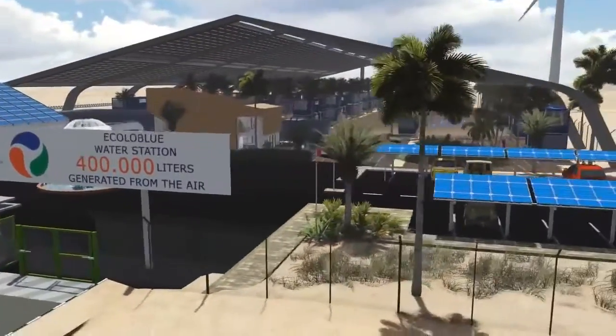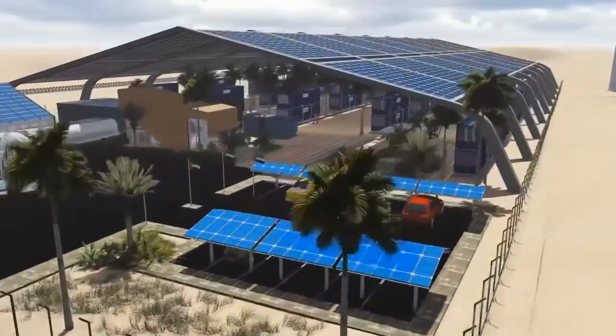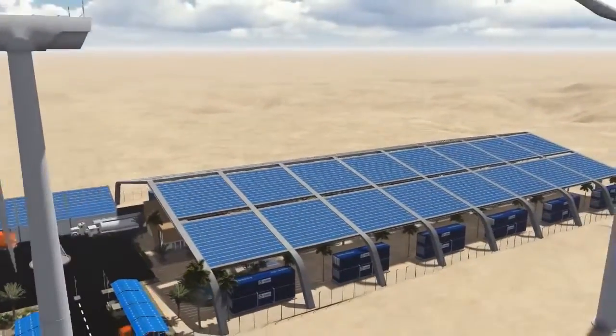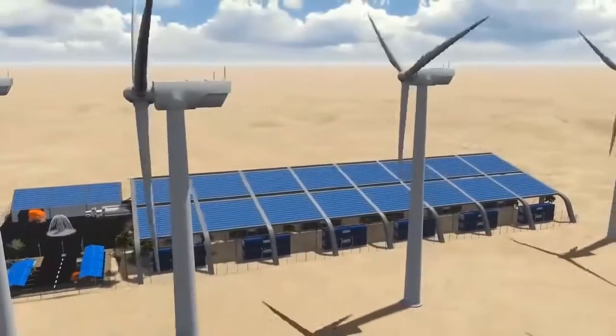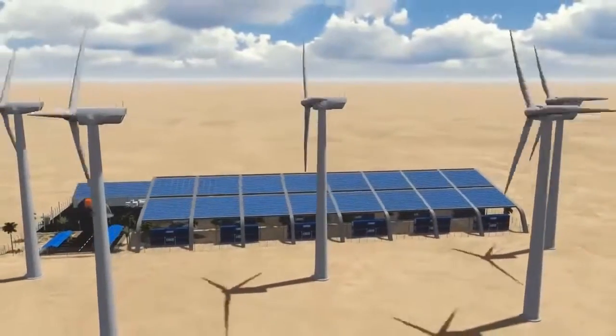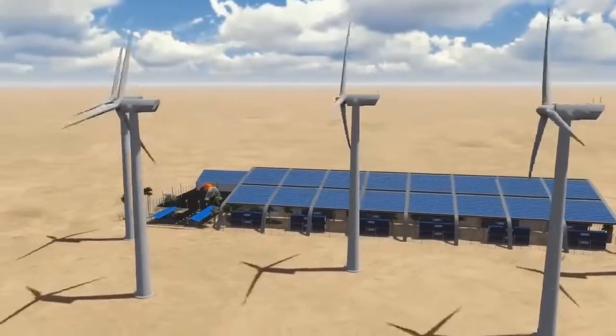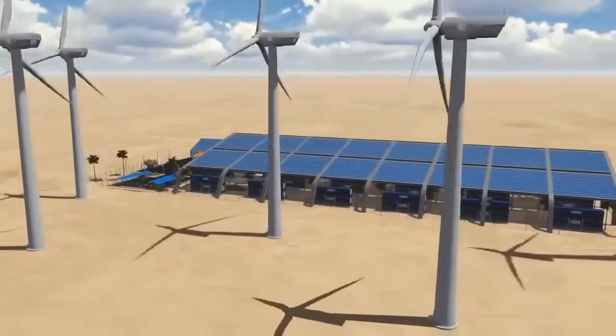The Ecolo Blue Water Station consists of 52 units of the Ecolo Blue 10,000 atmospheric water generators. The units are contained within a space of 83 meters wide and 160 meters long. This is a total land space of 13,500 square meters.